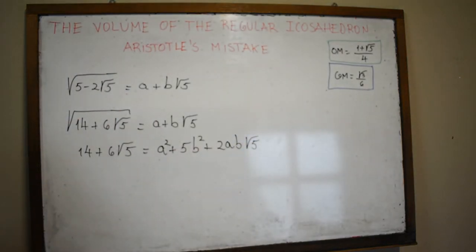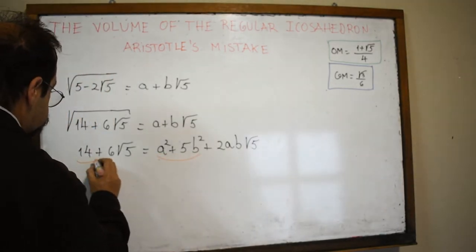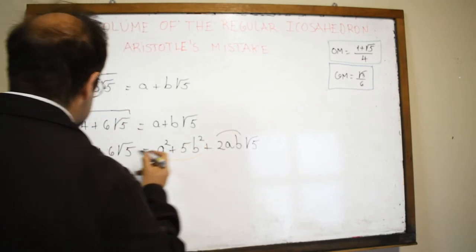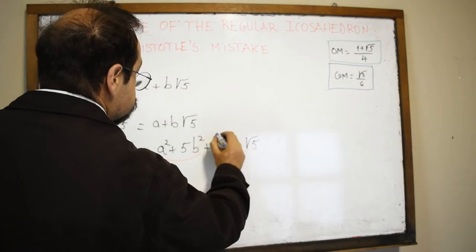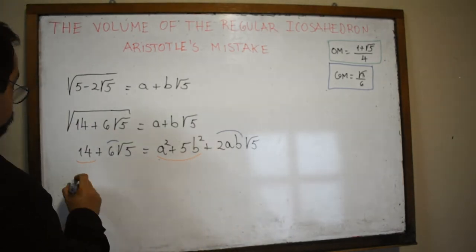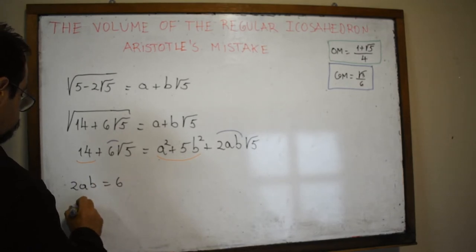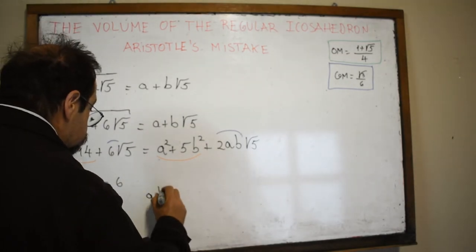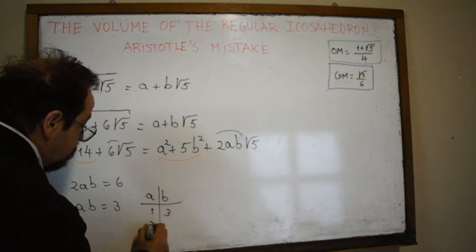For this to be true, the rational part a² + 5b² must equal 14, and the coefficient of √5, which is 2ab, must equal 6. Starting with the easier equation: 2ab = 6, so ab = 3. This gives two cases: a = 1 and b = 3, or a = 3 and b = 1.